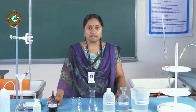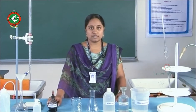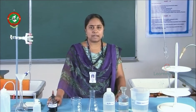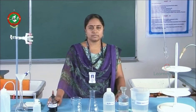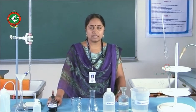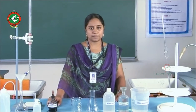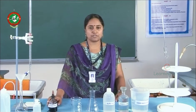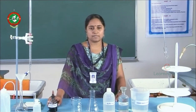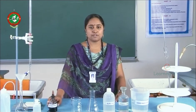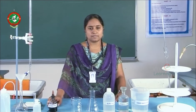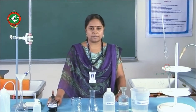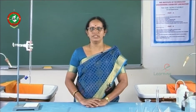The volumetric experiments are: estimation of total hardness of water by EDTA complexometric method; estimation of calcium oxide in cement by rapid EDTA method; determination of copper in brass solution using standard sodium thiosulphate solution; estimation of iron in hematite ore solution using potassium dichromate solution by external indicator method; estimation of alkalinity due to hydroxides, carbonates, and bicarbonates of water using standard HCl solution; and determination of COD of waste water. We shall see the volumetric experiments in Engineering Chemistry Lab.